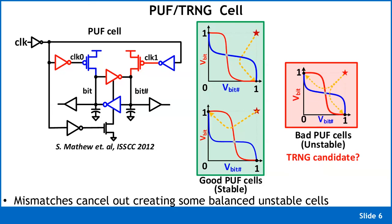There is significant post-processing to identify good versus bad PUF cells in, say, a one-kilobit PUF array. We identify which cells are good and use only those for generating the PUF value, while excluding unstable cells.